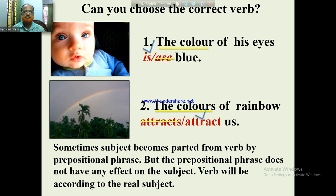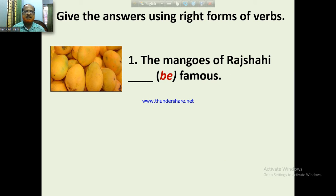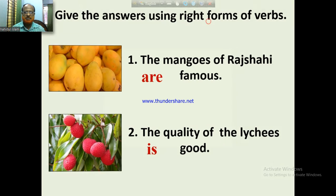The color and the colors — note the difference. For right forms of verb: the mangoes of Rajshahi are famous. The quality of the leases is good. The verb follows the real subject, not the noun in the prepositional phrase.